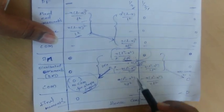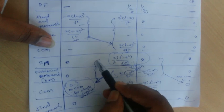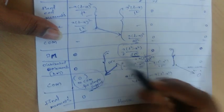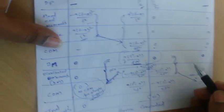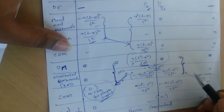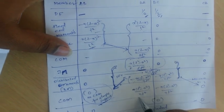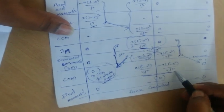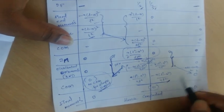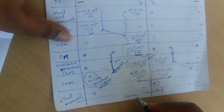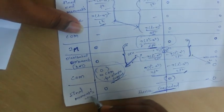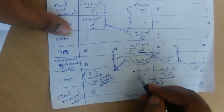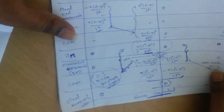Summing up the initial moments and the distributed moments: the values at A and C are zero, and the summation at BA is X(L²−X²)/L², which is exactly equal and opposite to the BC side. The problem is thus concluded, with final moments: M_A = 0, M_B = X(L²−X²)/L², M_C = 0.